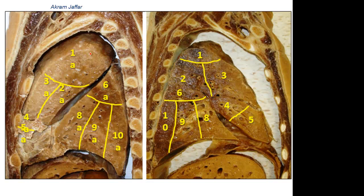In the left lung, the upper lobe — which represents the upper and middle lobes of the right lung — has five segments in all. And in the lower lobe of both lungs, left and right, there are five segments.